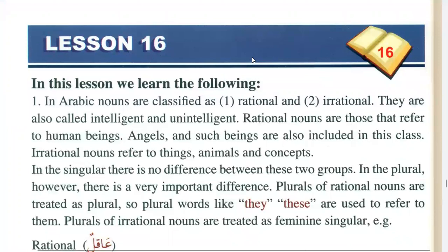Bismillah ar-Rahman ar-Rahim. Today we are going to start lesson 16. In Arabic, nouns are divided into two groups. First is known as rational, which means intelligent, and second is irrational, which means non-intelligent — non-living things or animals.